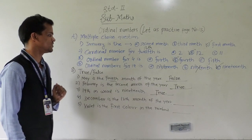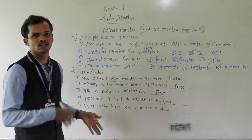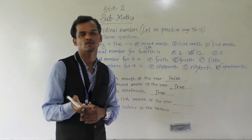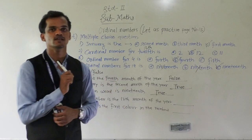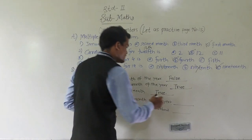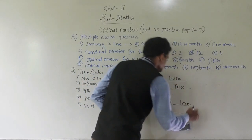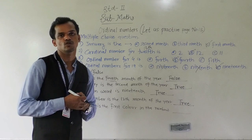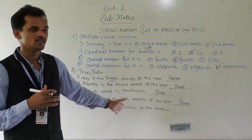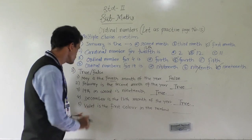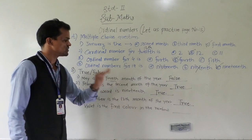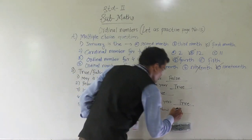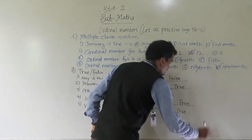Next: December is the 12th month of the year. There are 12 months in a year and December is the last month, and its sequence number is 12. So this statement is also correct — write: true. And violet is the 1st color in the rainbow. Violet comes in 1st position in the rainbow by wavelength. So this is also correct — write: true.